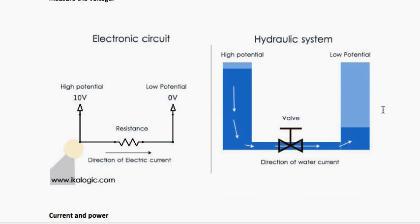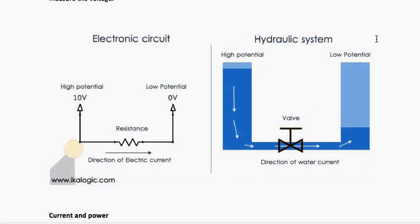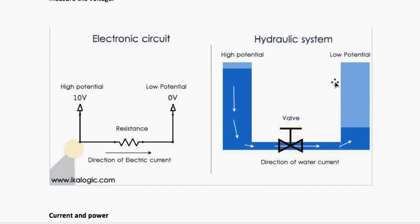The water will flow until the water level becomes equal. Now suppose instead of a valve you have connected an LED here, and instead of high potential you have connected +10 volts, and instead of low potential you have connected ground. Voltage from the higher potential, or 10 volts, will start flowing towards the side with low potential.